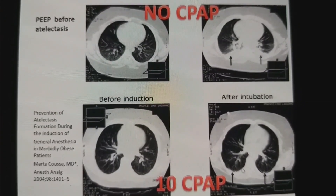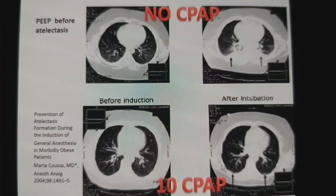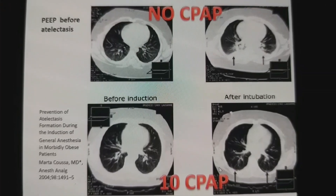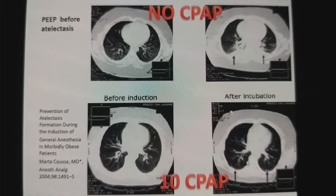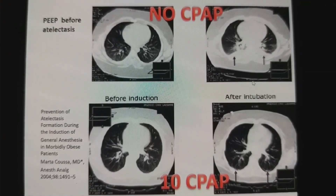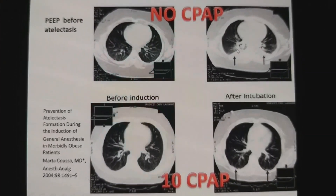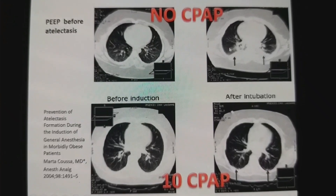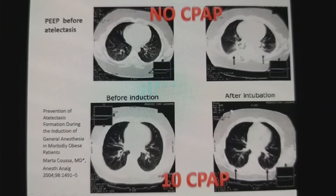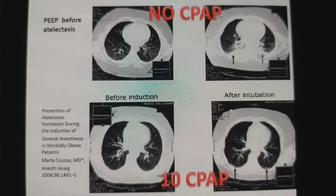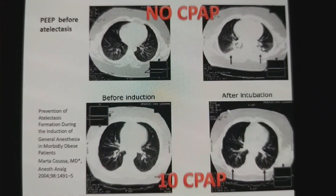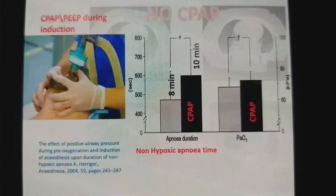Those who were given CPAP showed no development of atelectasis. Those patients who were not given CPAP developed dense areas in the lung, representing atelectasis.